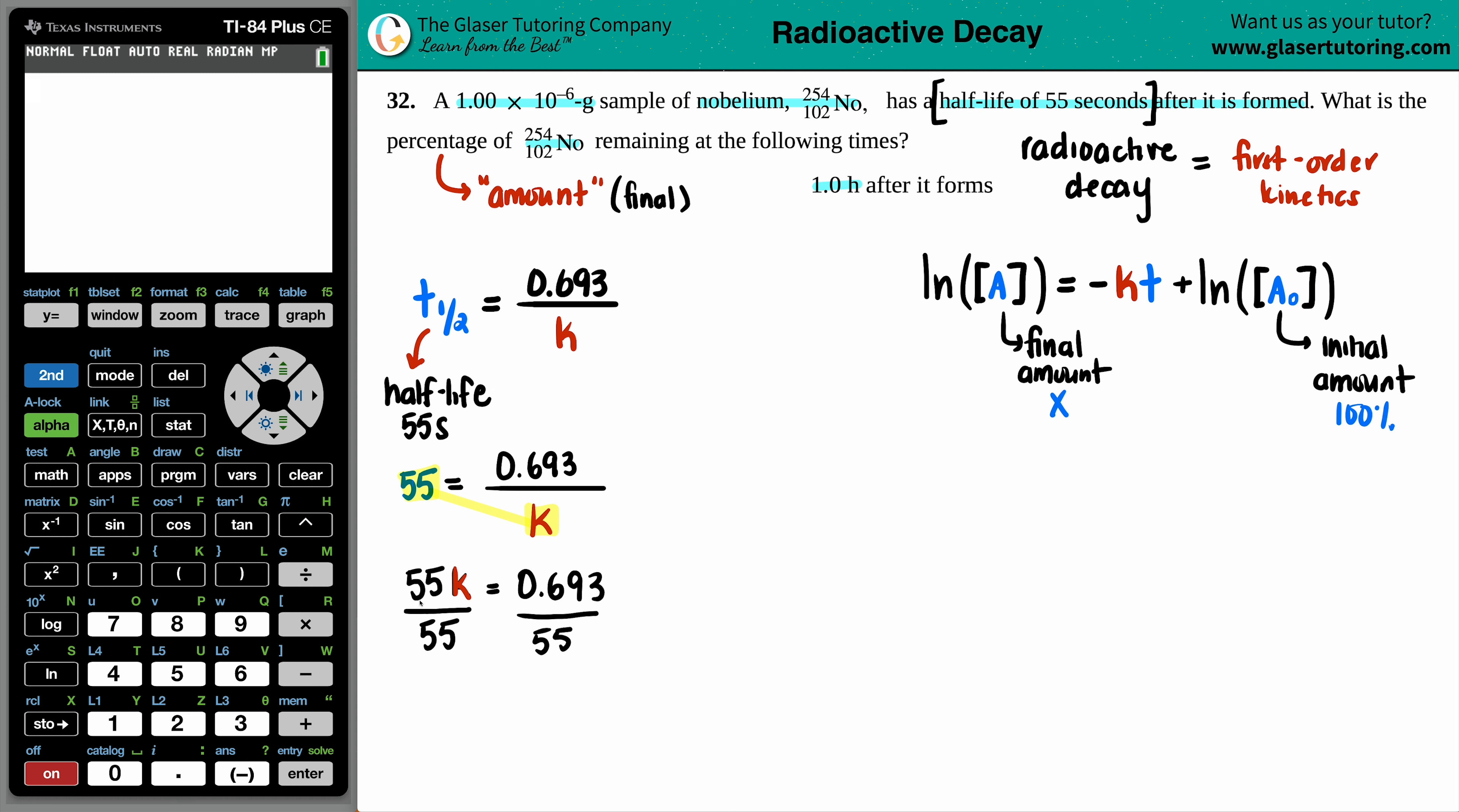We're going to solve for k now. Divide by 55, and we get a k value of 0.693 divided by 55: 0.0126. And this is in units of seconds to the minus one, or one over seconds, because we use the seconds as our half-life.